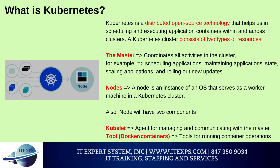A node is an instance of an OS that serves as a worker machine in a Kubernetes cluster. Each node will have two components: the Kubelet agent for managing and communicating with the master, and Docker container tools for running container operations.